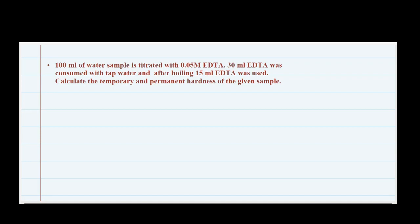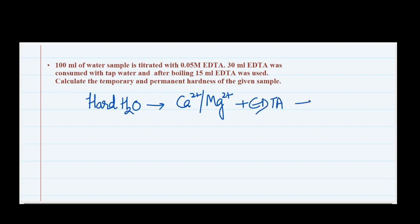We all know that water containing hardness is called hard water — it contains calcium or magnesium salts which do not produce lather with soap. Water becomes hard if it has dissolved salts of calcium and magnesium, and it won't give proper lather with soap. In my water playlist I have explained how it reacts with EDTA and how it makes a bond with EDTA.